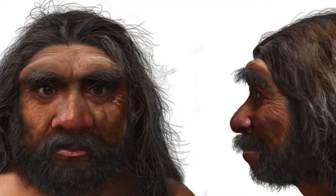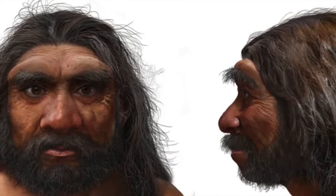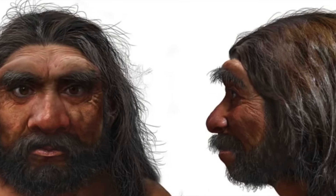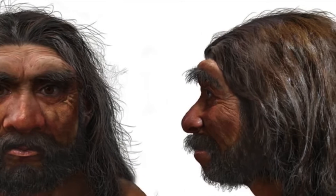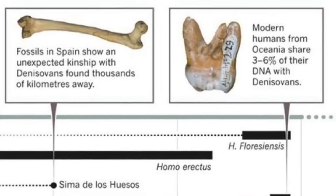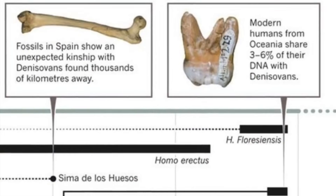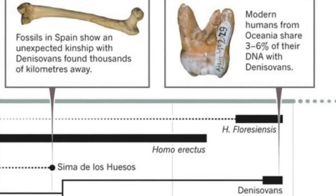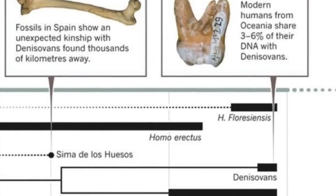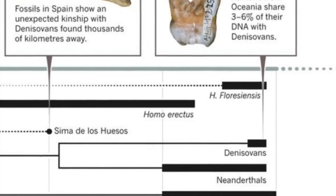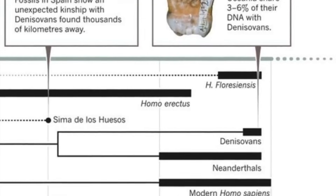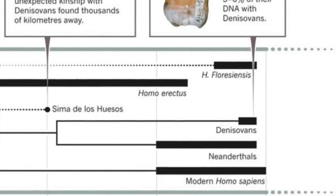However, scientists have not yet managed to recover complete genomes from more ancient human ancestors. To overcome this, population geneticists have created statistical methods to detect unusually ancient DNA segments in the genomes of living individuals.